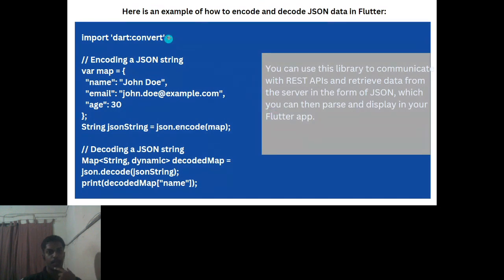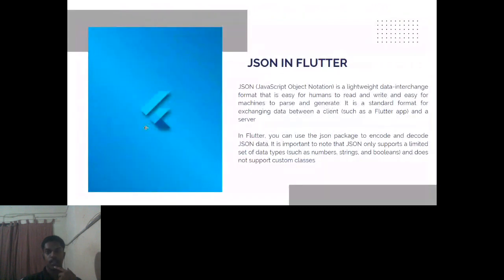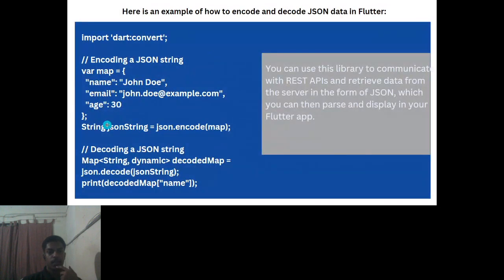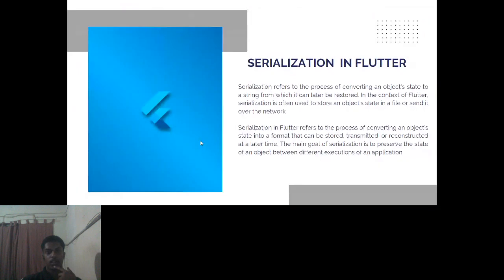Here's an example of how to encode and decode JSON data in Flutter. After importing 'dart:convert', variables for name, email, and age are defined. A JSON string is created using json.encode(map). You can learn more about backend operations in further sessions.